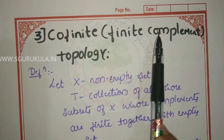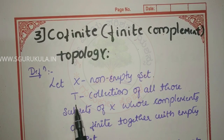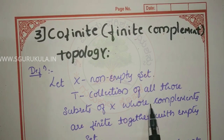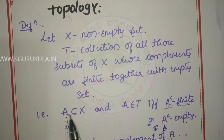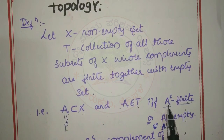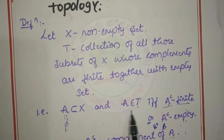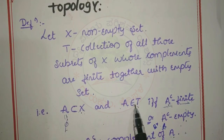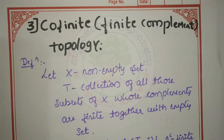Next, co-finite topology, also called finite complement topology. Let X be a non-empty set. The co-finite topology T consists of those subsets of X whose complement is finite, together with the empty set. A subset A of X, which can also be the empty set, belongs to T if the complement A' is finite or A is empty.